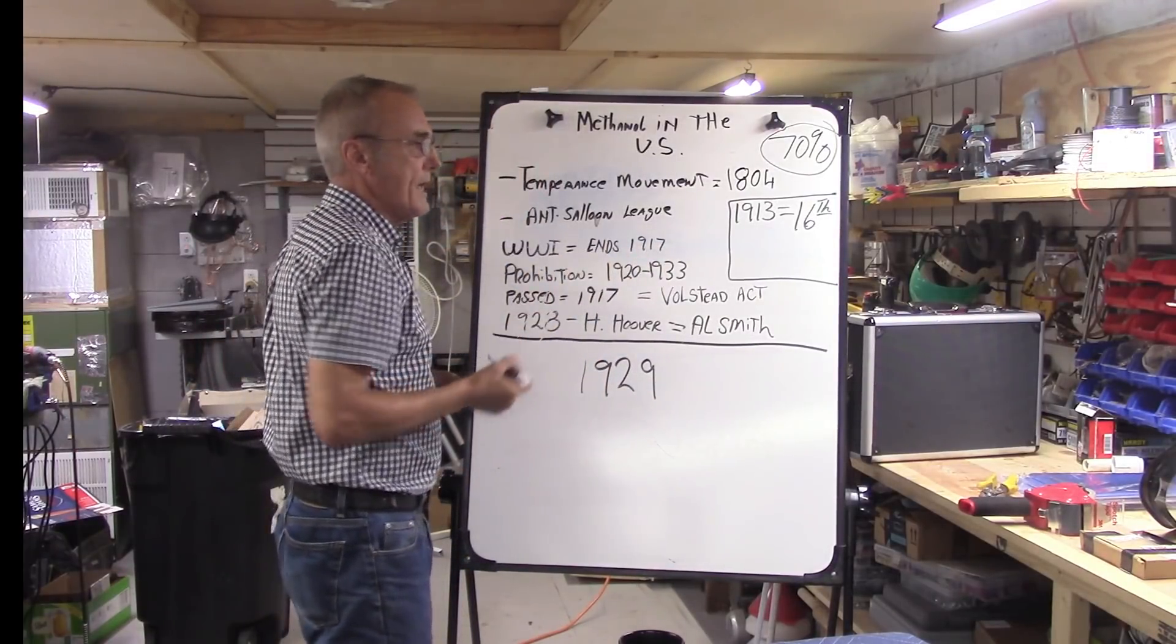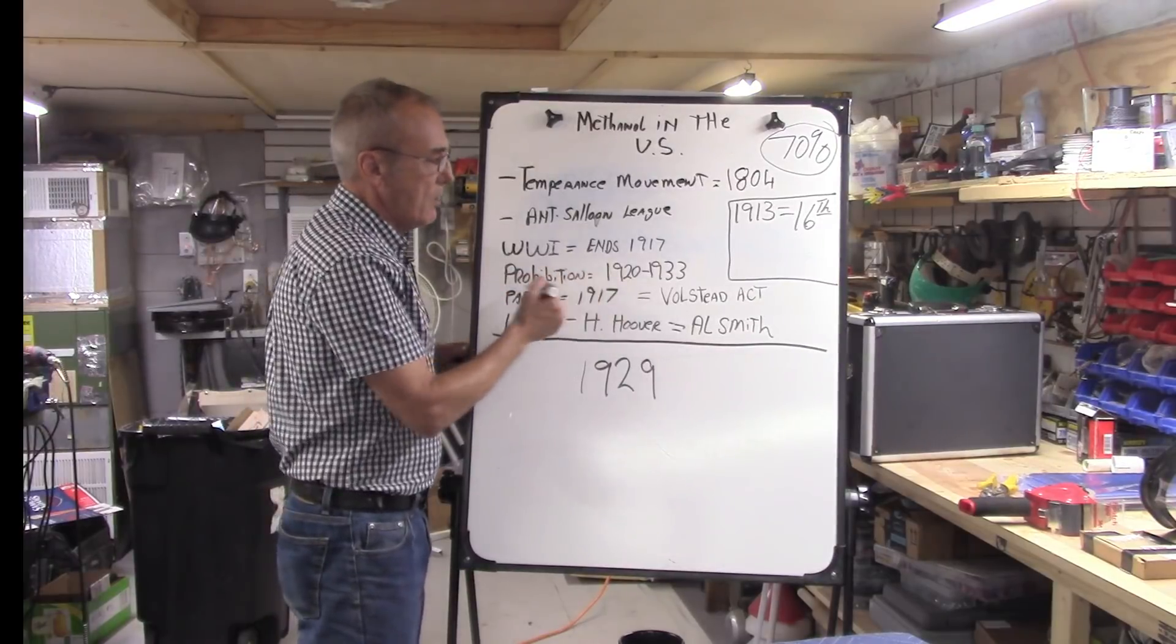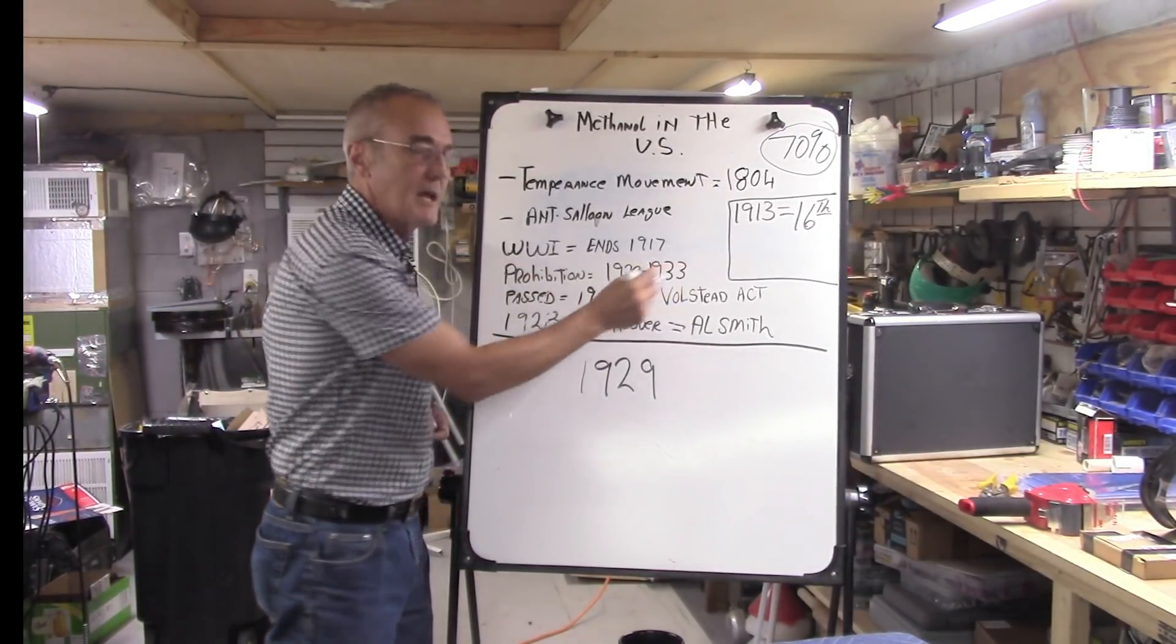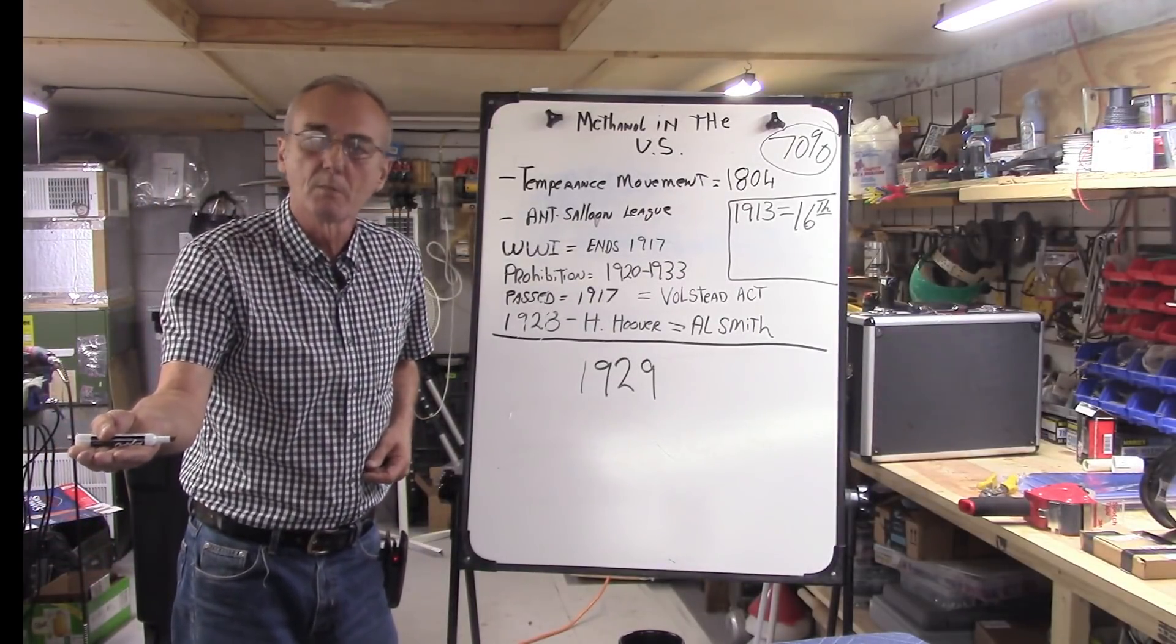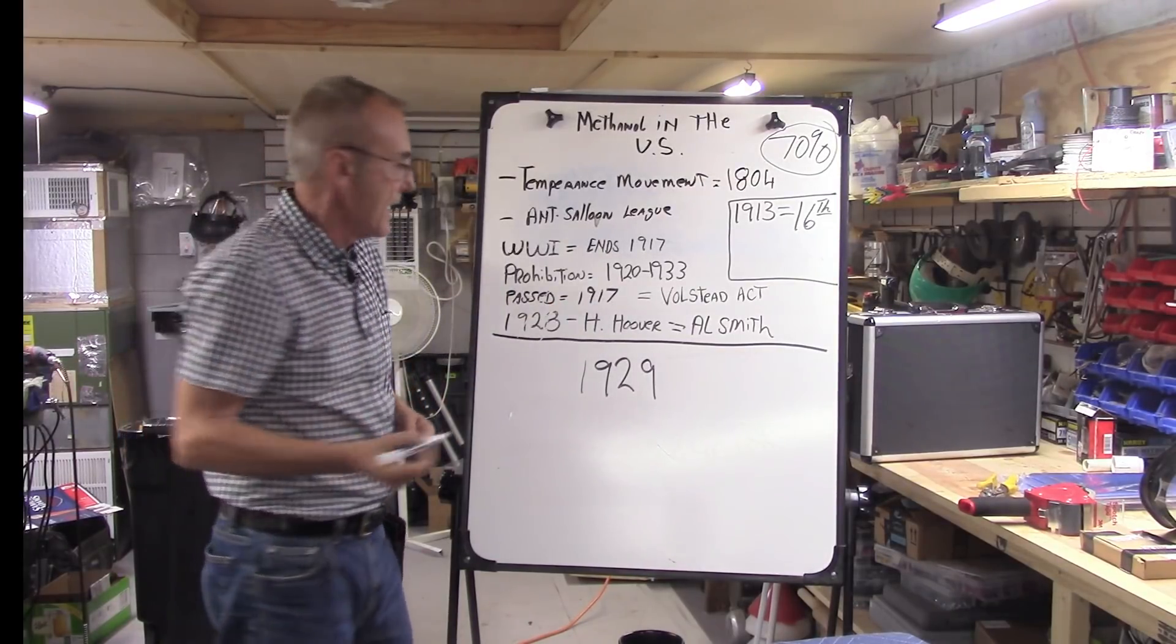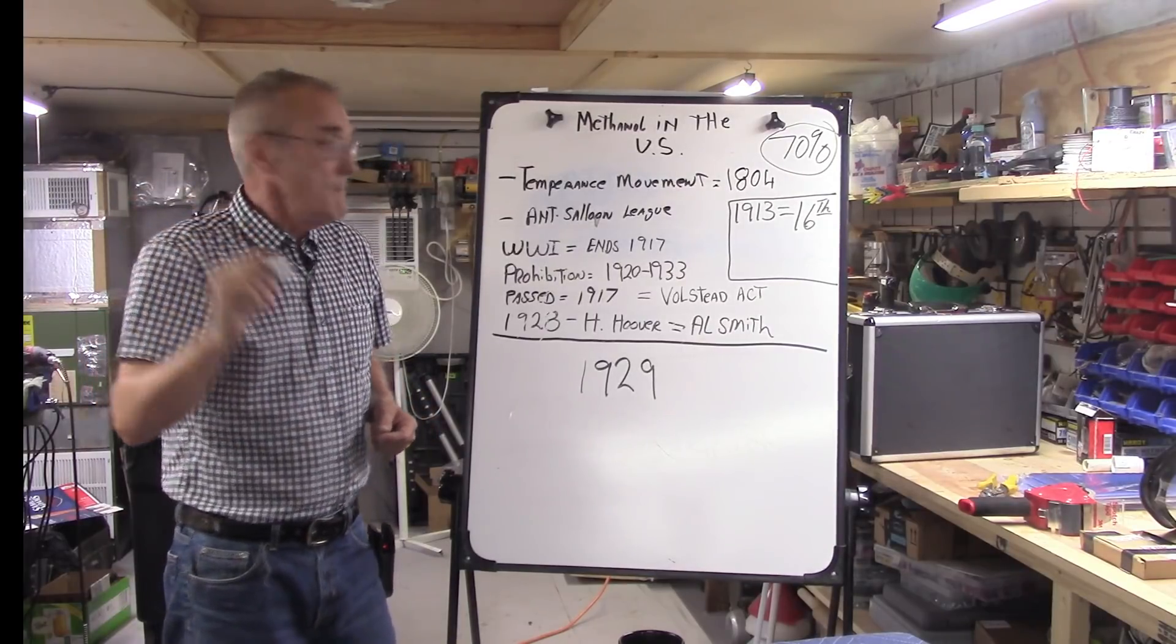World War I ends in 1917 and now we've got this huge debt. Prohibition started in 1920 and ended in 1933 - 13 years of what some people call a terrible time in the United States. It all depends on which side of the fence you land on.